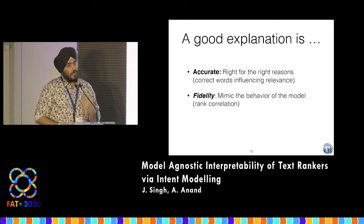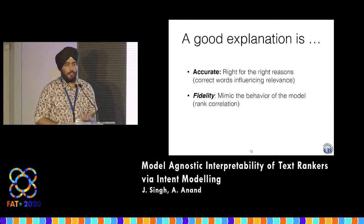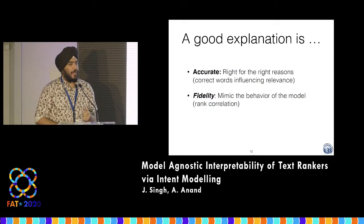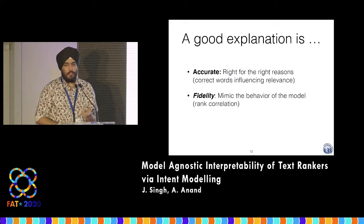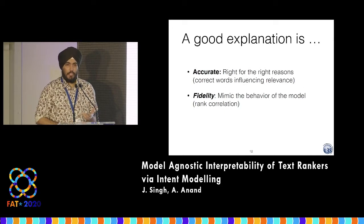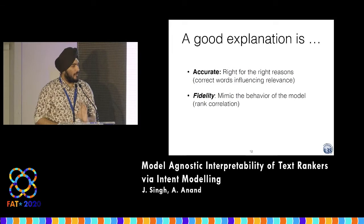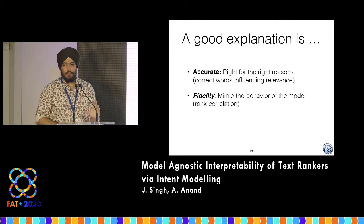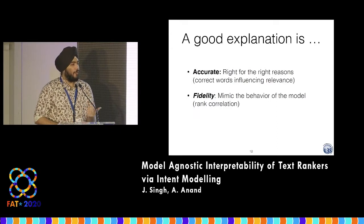What makes a good explanation? How do we select the terms and the scoring function? This is what we optimize for in our method. We want the terms to be accurate — these should really be the ones that influence the semantic match between query and document, not other terms that might be correlated with them. The second criterion is high fidelity: the simple ranking function in conjunction with the terms should reproduce the decision the black box makes. This is usually measured using a rank correlation metric like Kendall's tau. If your explanation model can recreate the ranked list, it's pretty good; if it can't, the explanation is bad.